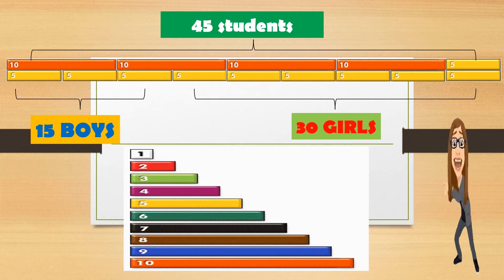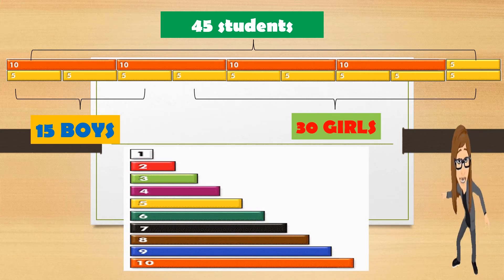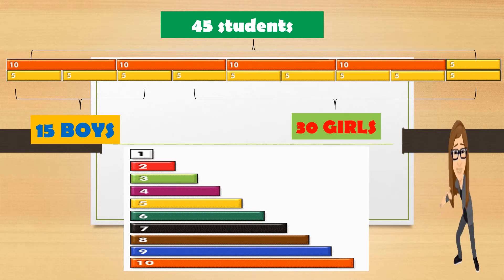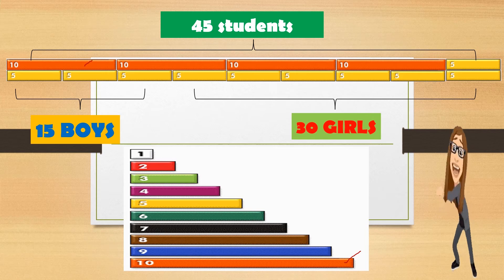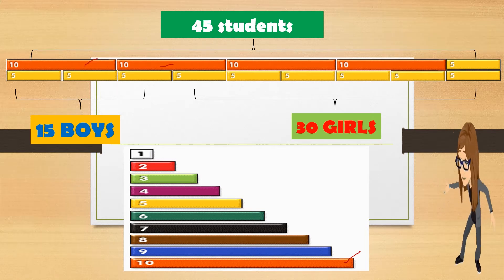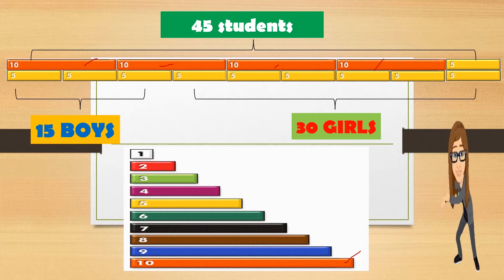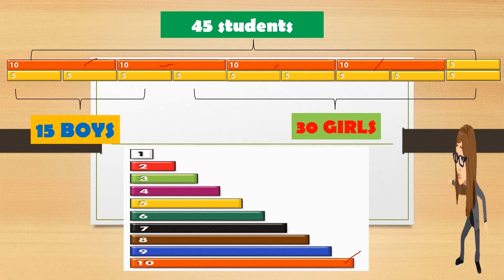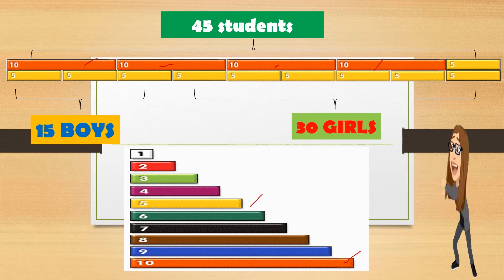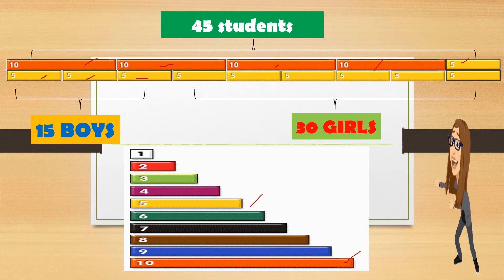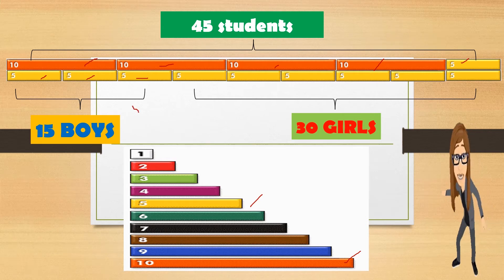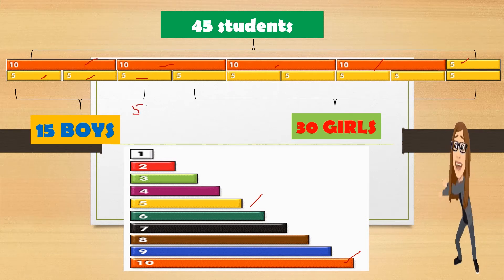See? Using rods of 10, we count: 1, 2, 3, 4, and 5. So we have 15 boys - that's 1, 2, 3 rods. So 5 times 3 is 15.